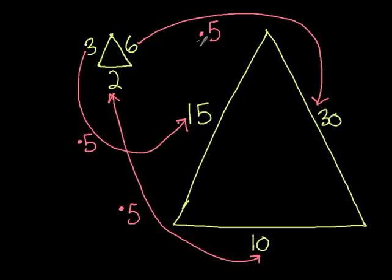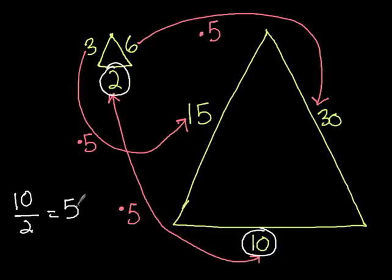And we know the scale factor is 5, because if we take our 10 right here, and divide it by the other corresponding side here, 10 divided by 2 equals 5. And that is kind of a short introduction to similar triangles.